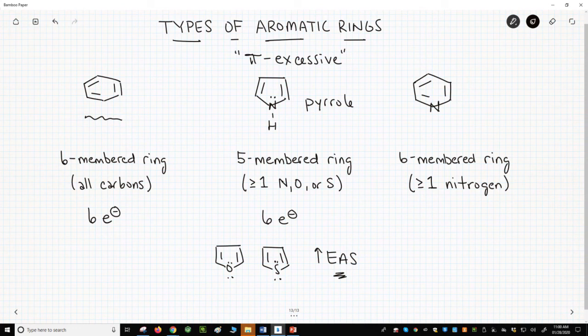The last group, Group 3, has pyridine for its example. Pyridine, like benzene, is a six-membered ring. Again, it has six electrons in its p orbitals.